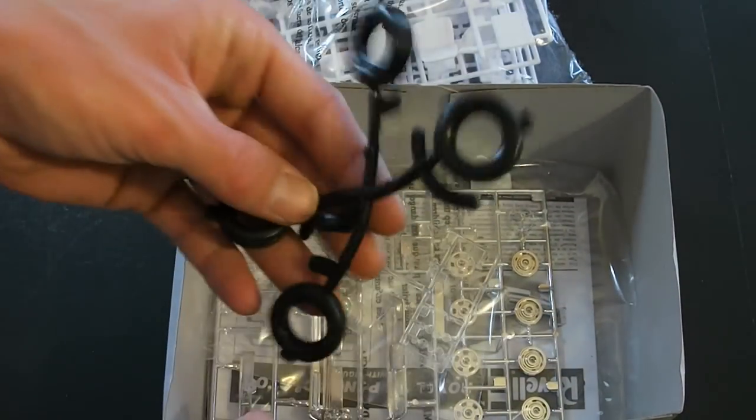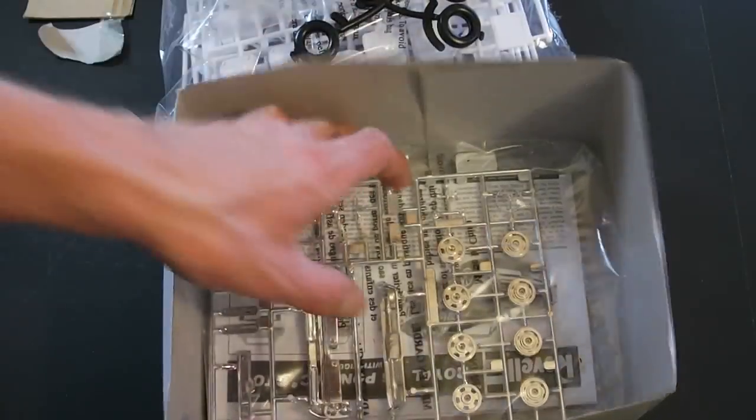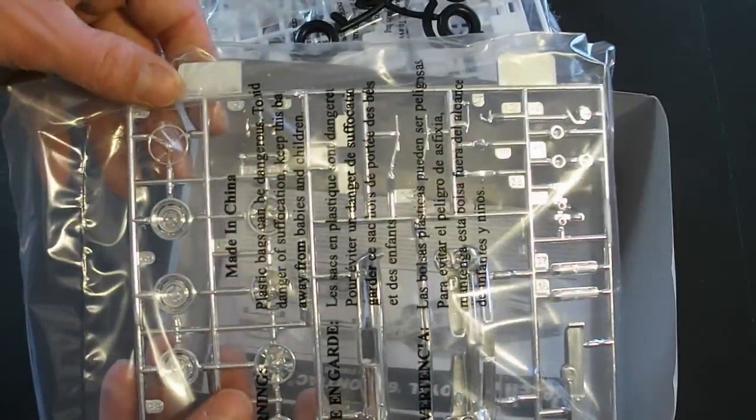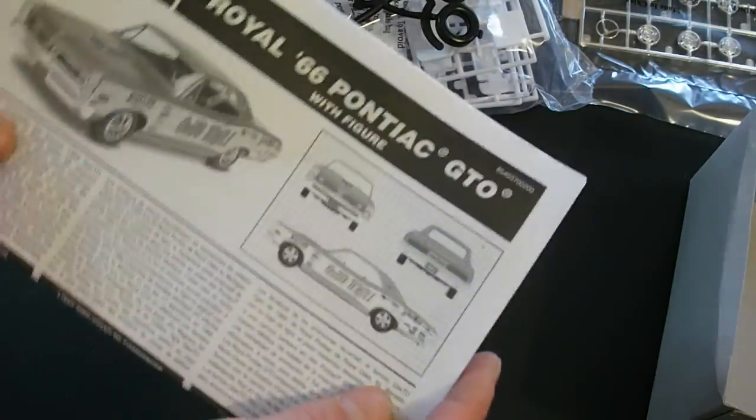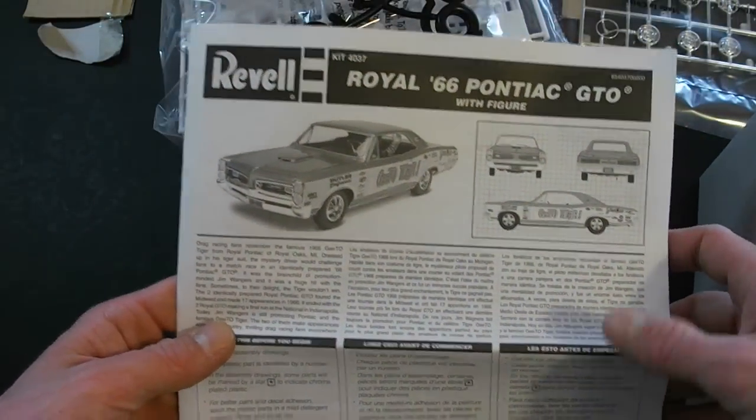It's a bag with all your white molded parts, vinyl tires on the parts tree, clear molded parts. And your chrome plated parts tree right here, as well as the construction sheet, typical Revell monogram fashion here.